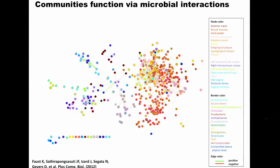The goal of my talk is very simple: I want to convince you that all of these interactions cannot be happening at the same point in space at the same time. Why? Because microbes have a finite size, and you can't pack too many cells next to each other. So within any spatial location, only a very small subset of this network is going to be realized. And things are worse than that, because spatial structure is not random.